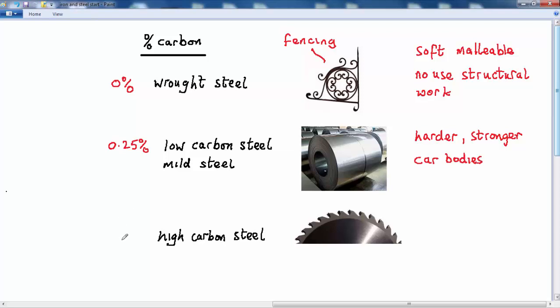And then if we move up to high carbon steel, which is around about 1.5% carbon content, well, this is considerably harder than the mild steel, and so is used, for example, for cutting tools. You have to be careful with this type of high carbon steel, because as the steel gets harder, it can also become more brittle, and there can be a tendency for this type of tool to fracture.